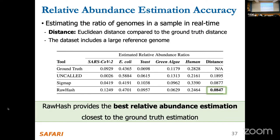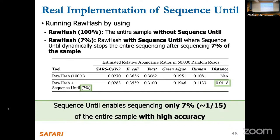This is an additional accuracy measurement based on relative abundance estimation. RawHash provides the best relative abundance estimation compared to the ground truth relative to other tools. Regarding sequence-until: by sequencing only 7% of the entire sample, we can still achieve as accurate an analysis as sequencing the entire sample. This means we can reduce sequencing time and cost by almost 15x while still providing very accurate results.